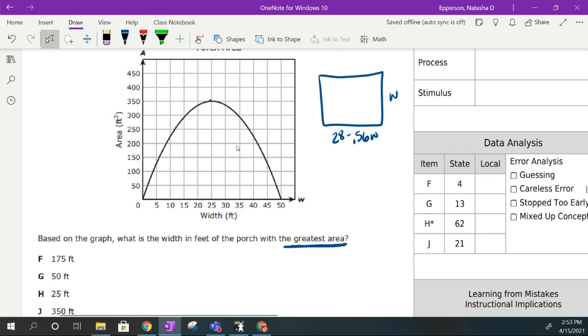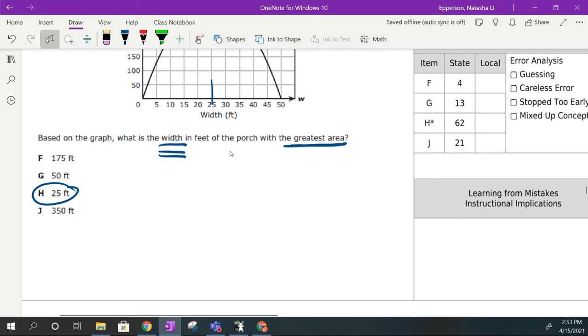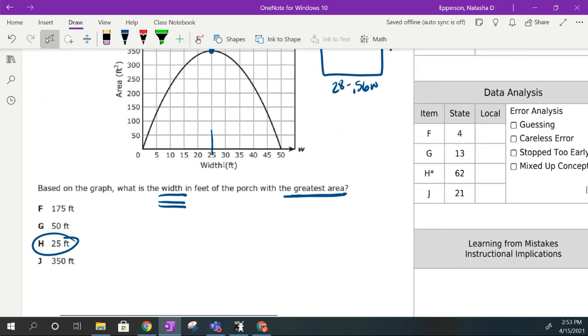Based on the graph, what is the width in feet of which the porch is going to deal with the greatest area? The greatest area, we're looking at dealing with our maximum value. The maximum value and we're looking at the width, specifically the width. If it said the length, then that would be 350. Since it's saying the width, that value is going to be h, which is 25. So that's dealing with our axis of symmetry.